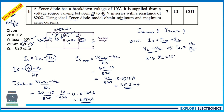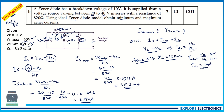Let us assume RL = 10 kilohms. With this assumption, we can find IL. IL = VL / RL = VZ / RL = 10 volts / 10 kΩ = 1 milliamp. So IL = 1 milliamp.